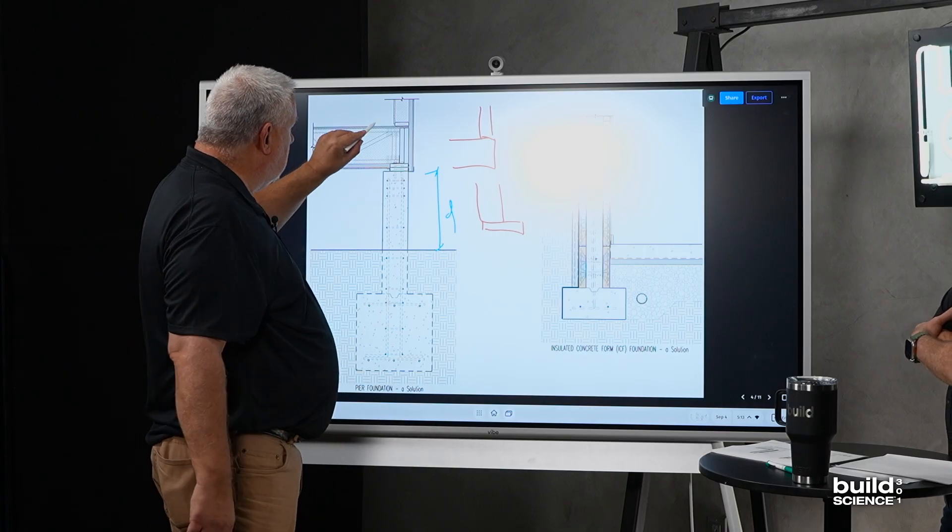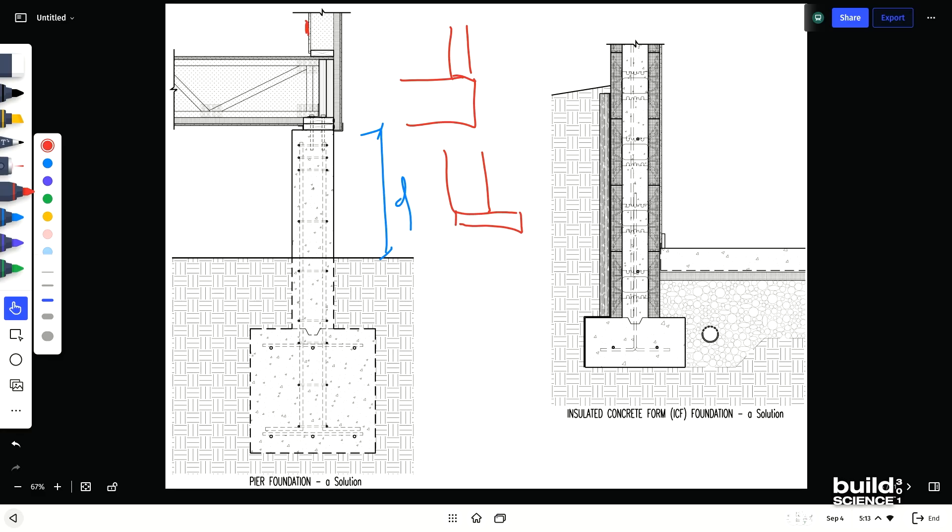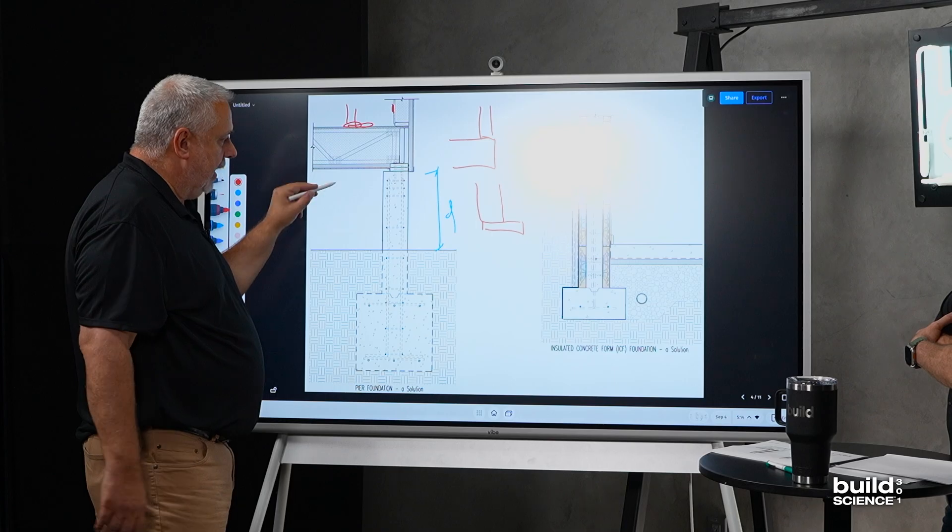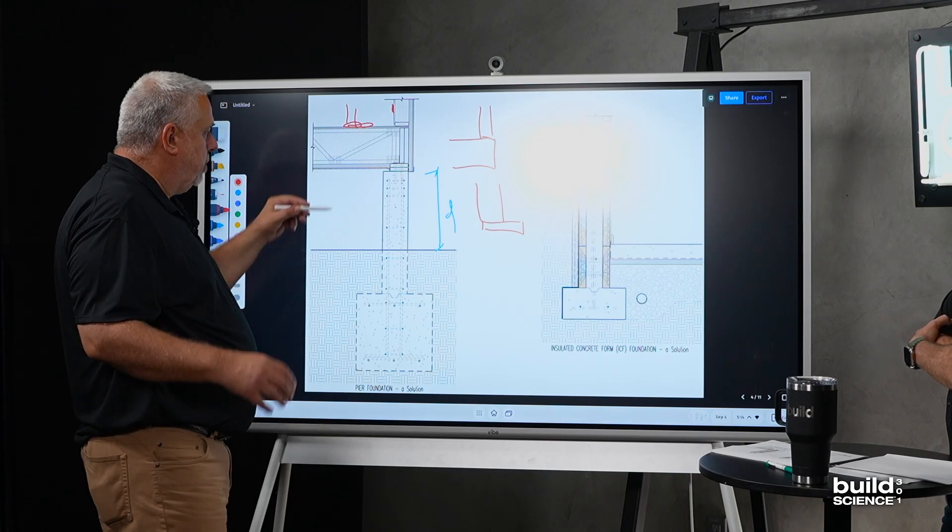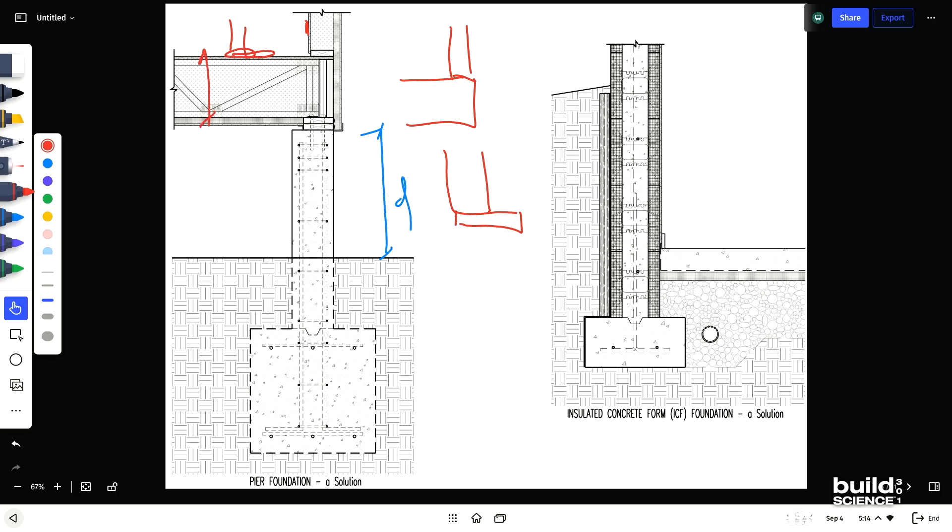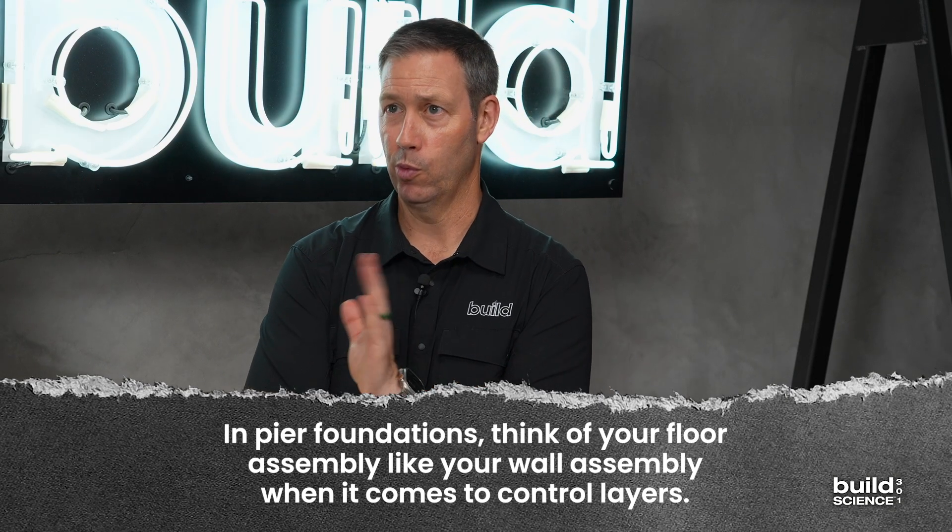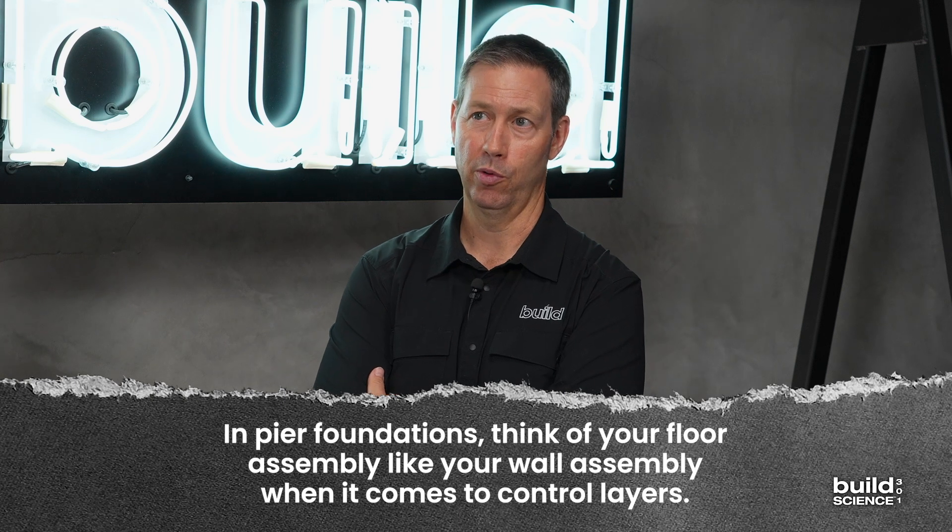Now, the difference is I'm probably not leaning up against that wall all the time, but I will be standing on there. So I have a comfort issue because I have direct contact there. But as far as air sealing, thermal and vapor, everything that happens across here is pretty much everything that happens across there. So what I'm hearing you say is, why wouldn't we build that floor the same way we'd build our wall?